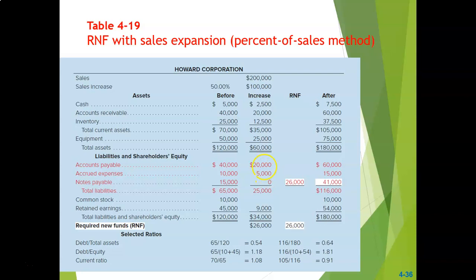Accounts payable and accrued expenses both increase by 50%. Notes payable will not change from the spontaneous increase in assets and liabilities, but will change from the required new funds. We can see that there would be a 25,000 increase in liabilities caused by the 100,000 increase in assets. Retained earnings would increase by 9,000, all as we initially determined.